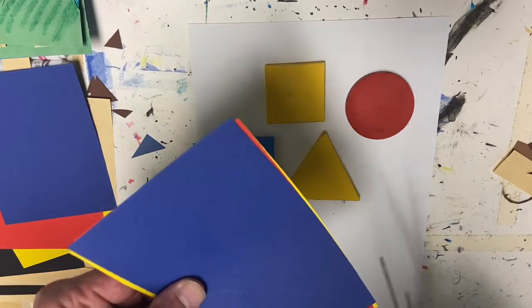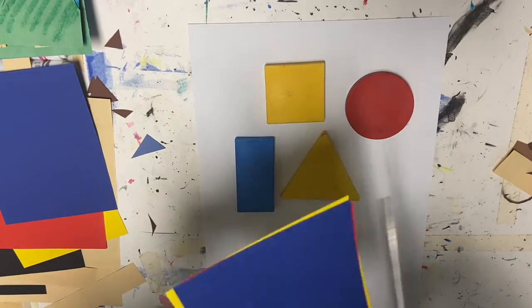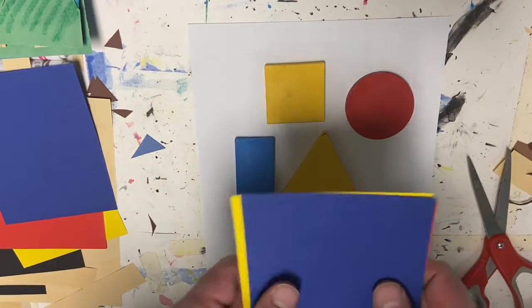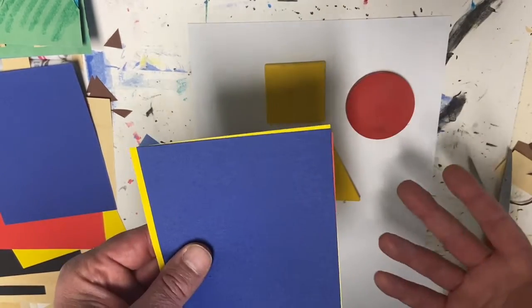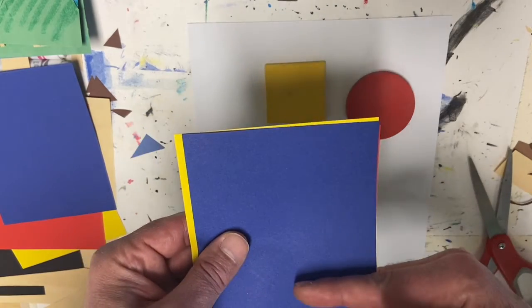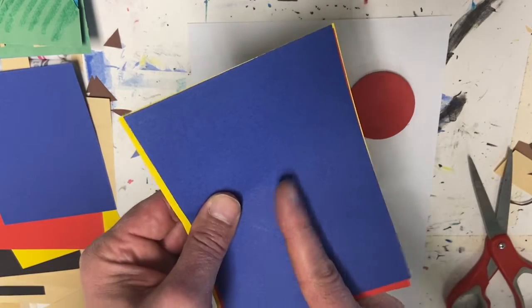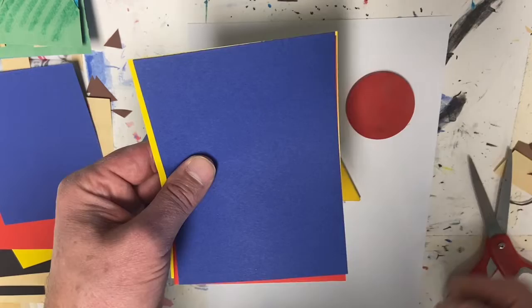So maybe let's try to cut a circle. That might be the most difficult because most of these, you can use the edge of the paper. If you have it lined up, cut line here, line here, you've got triangles. Line here, line here, you've got squares. Line here, line here, you've got rectangles.